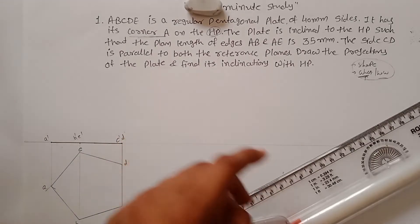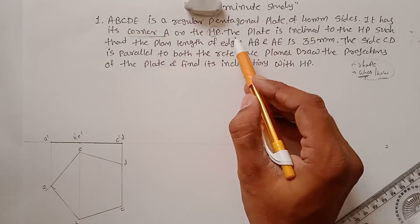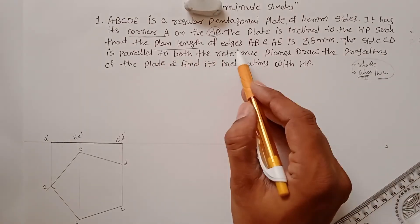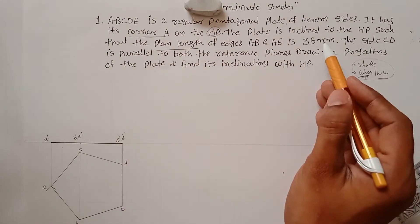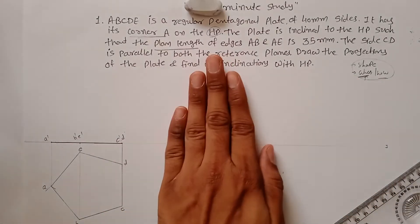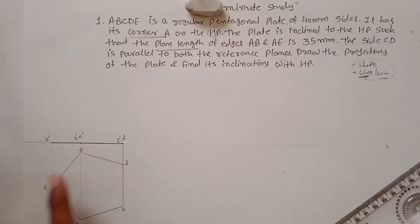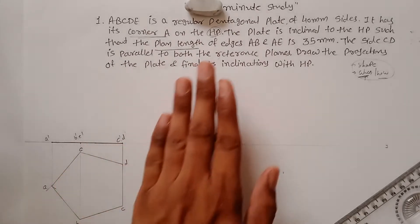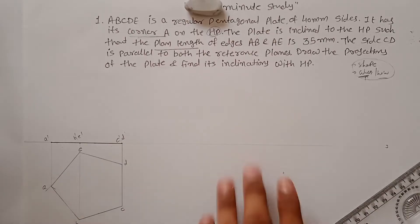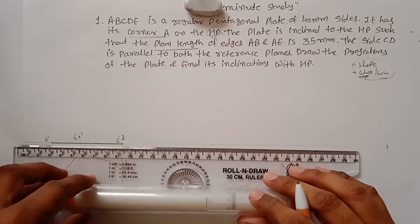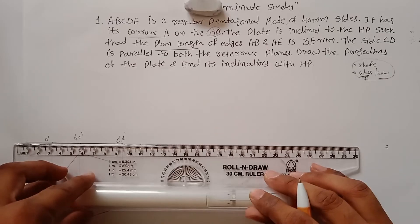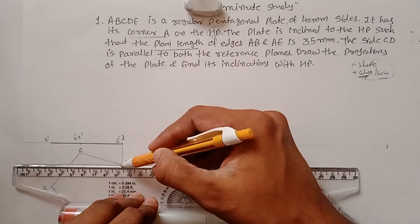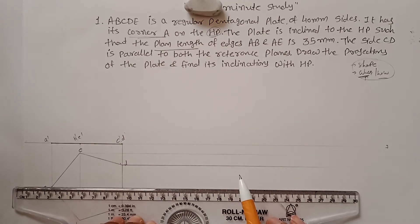Now move to the second position. Read the second sentence: the plate is inclined to HP such that the plan length of edges A'B' and A'E' is 35mm. When you rotate a plane, some sides become shorter. The 40mm edges will shorten to 35mm, but the rest of the pentagon dimensions are unknown. Draw thin projection lines from each corner of your pentagon.